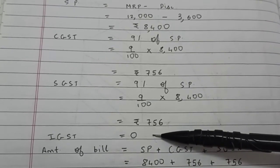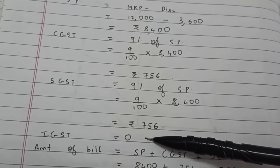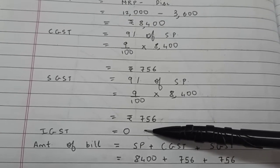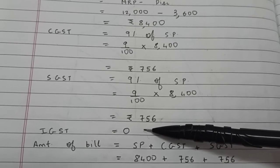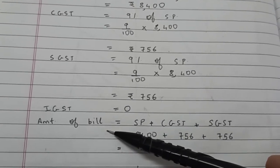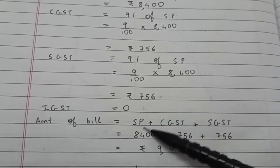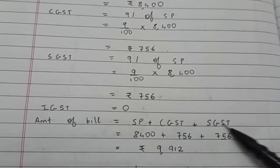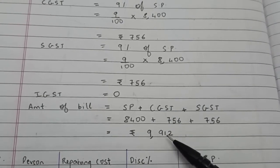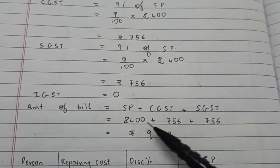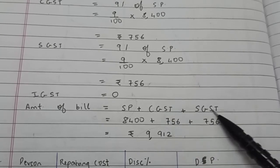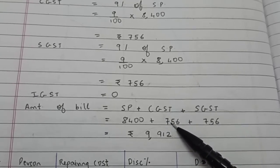The total amount to be paid in the end is always the sale price plus the taxes, which comes to ₹9,912. Out of this, only ₹8,400 goes into the pocket of the seller — the tax amount has to be paid to the government.